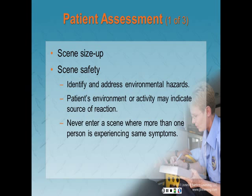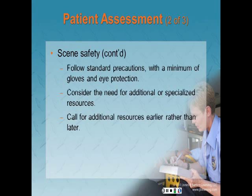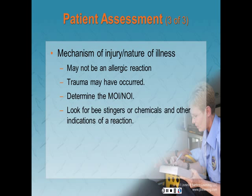Patient assessment begins with scene size-up. First, make sure the scene is safe and identify and address environmental hazards. The patient's environment or activity may indicate the source of the allergic reaction — did they receive a sting or bite from an insect, is it a food allergy at a restaurant, or is it a new medication? A respiratory problem reported by dispatch may be an allergic reaction, but if many people are affected, it could be an inhaled poison or a terrorist event. Never enter a scene where more than one person is experiencing the same symptoms with a similar onset. Follow standard precautions with a minimum of gloves and eye protection and consider the need for additional or specialized resources. Call for additional resources early rather than late. Check your mechanism of injury or nature of illness, and look for bee stingers or contact with chemicals or other indications of a reaction.